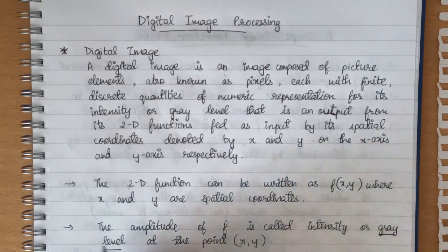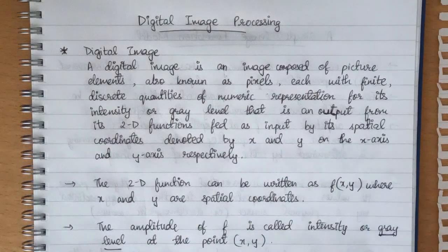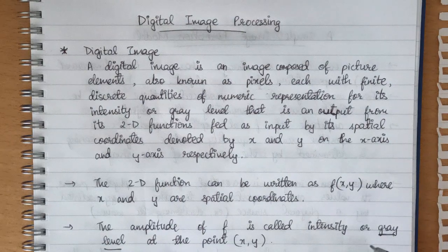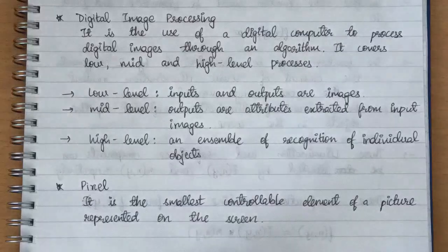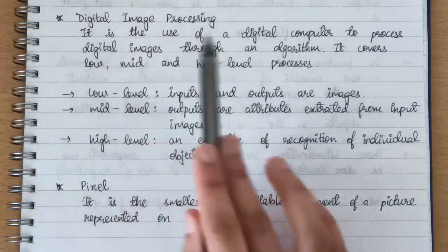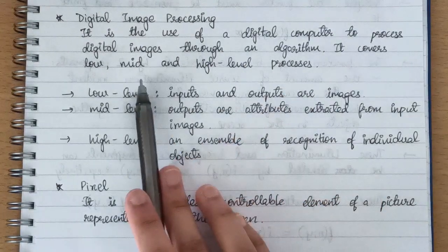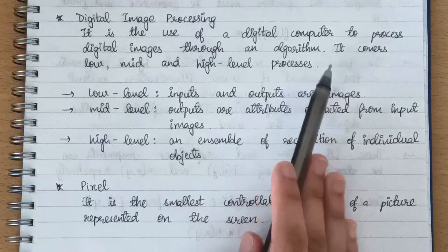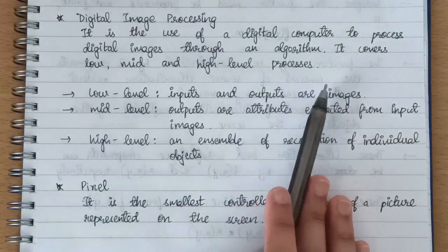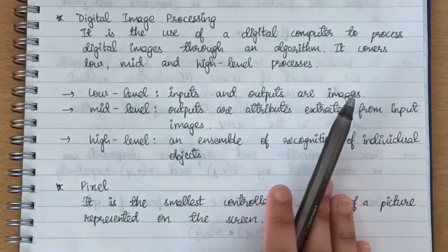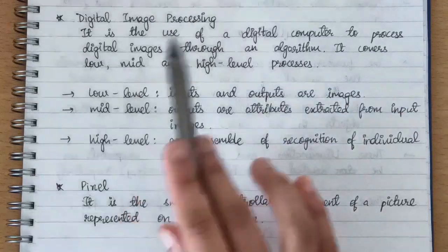Digital image processing—it is the use of computer to process images with the help of an algorithm. Easy, right? So based on different applications, we have divided this entire procedure into different levels.